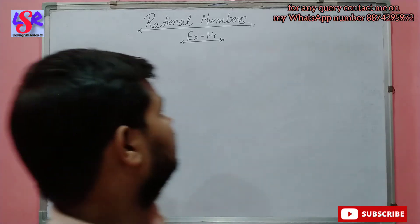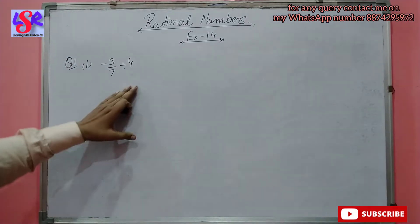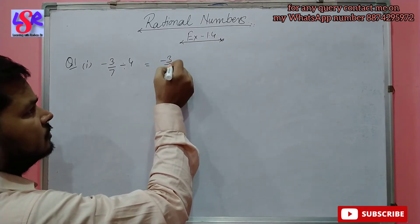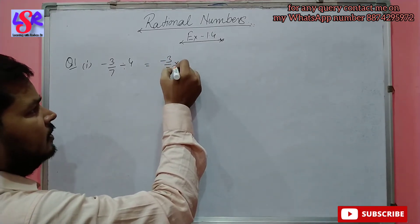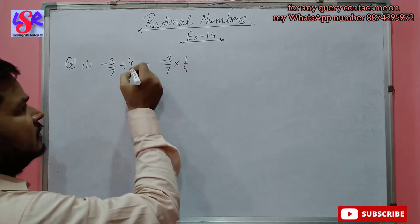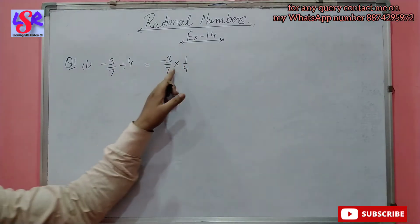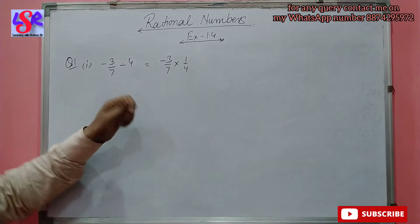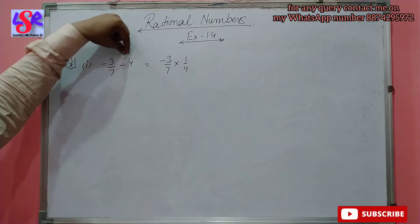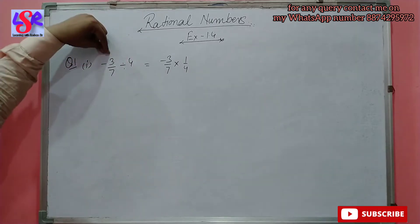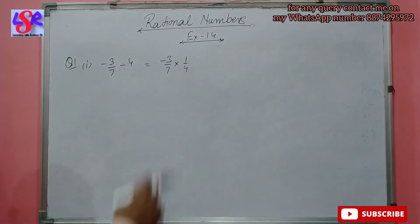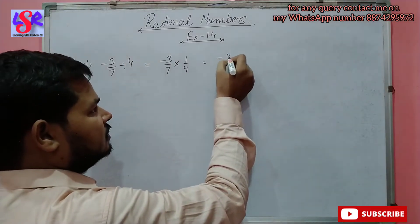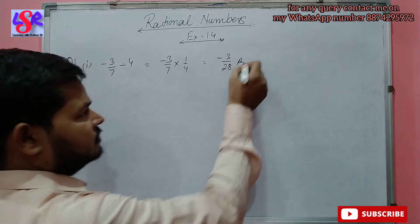In question number 1, the first part, we have minus 3 upon 7 divided by 4. So this division sign we will change to multiplication by taking the reciprocal. So minus 3 upon 7 into 1 upon 4. We change division to multiplication and take the reciprocal, giving us minus 3 upon 28 as the answer.